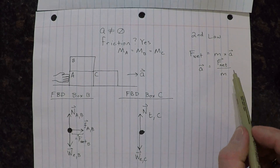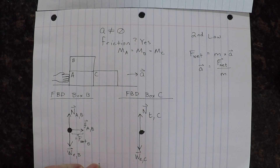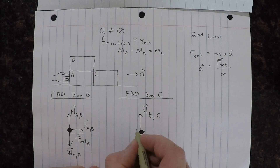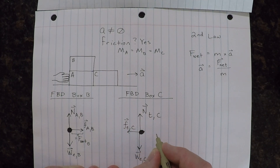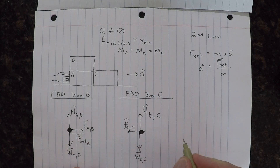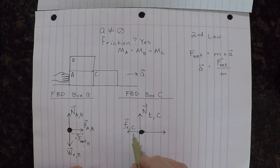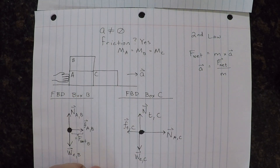For this situation, we have an acceleration to the right. In order to get that, we need a normal force pushing to the right that is larger than the frictional force of the table pushing to the left. So we have a frictional force of the table on block C pointing left, and then a normal force — the normal force of A on C — pointing right and larger, so that subtracting the frictional force gives us the correct net force. It is block A that is actually pushing on C.